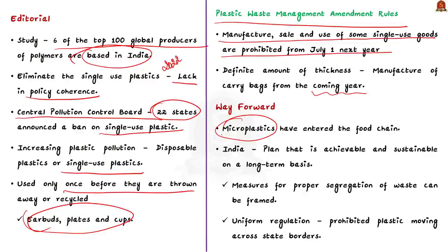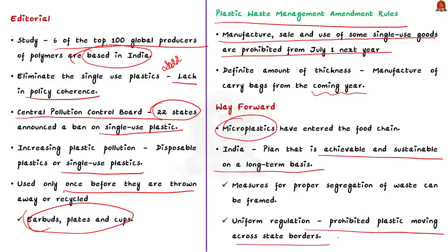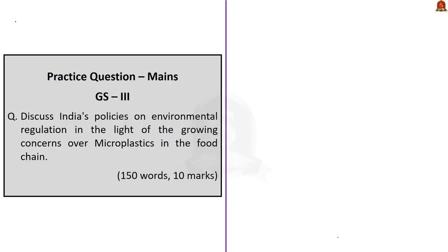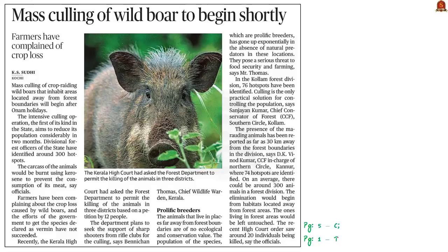To conclude, unlike the lofty policies on environmental regulation framed so far, India should devise a plan that is achievable and sustainable on a long-term basis. For instance, measures for proper segregation of waste can be framed, since a considerable amount of plastic waste cannot be recycled due to lack of segregation. Likewise, uniform regulation with regard to prohibited plastic moving across state borders should also be encouraged. With this, we have come to the end of this discussion.